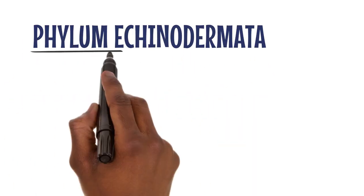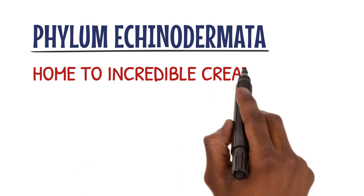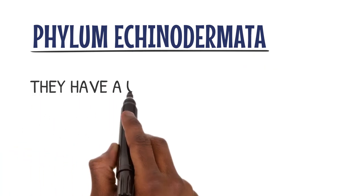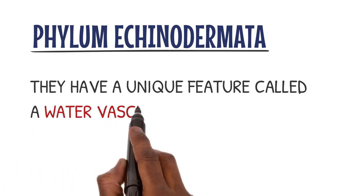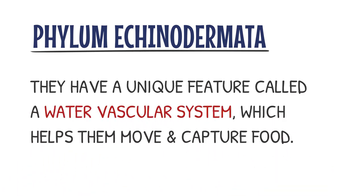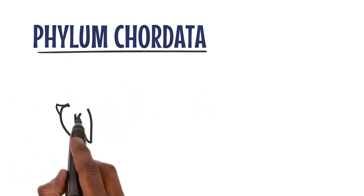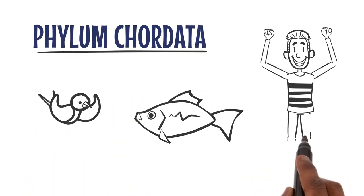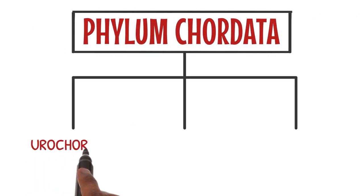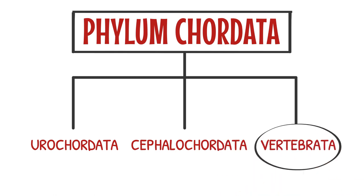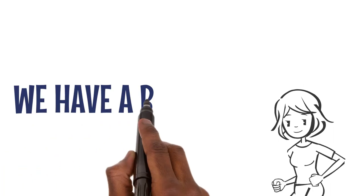Moving on to the mesmerizing Phylum Echinodermata, home to incredible creatures like starfish and sea urchins. They have a unique feature called a water vascular system, which helps them move and capture food. Let's learn about Phylum Chordata, which includes some of our closest animal relatives. This phylum is divided into three subphyla: Urochordata, Cephalochordata, and Vertebrata. We belong to the subphylum Vertebrata because we have a backbone.